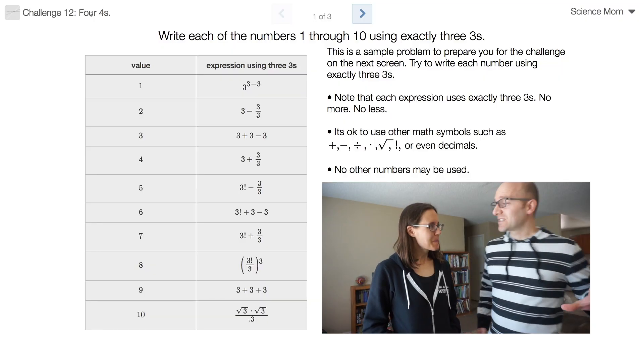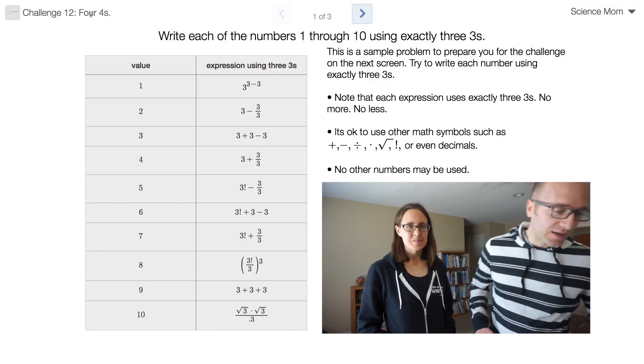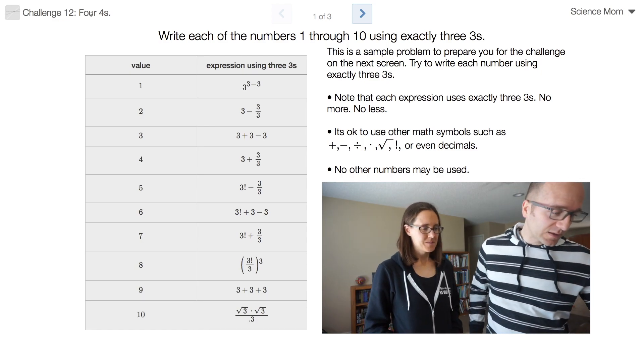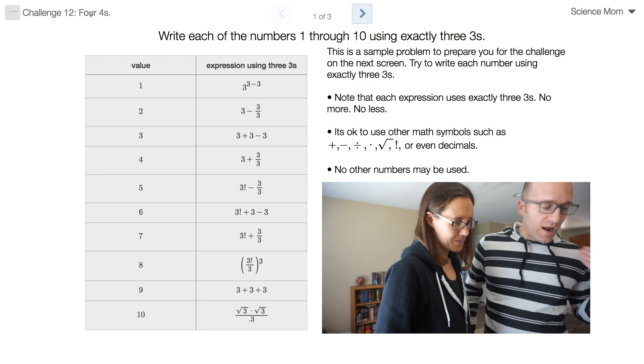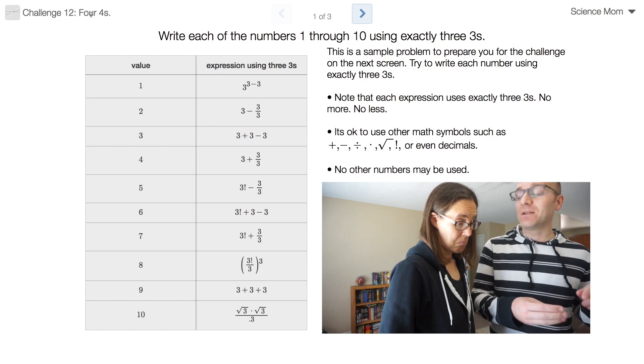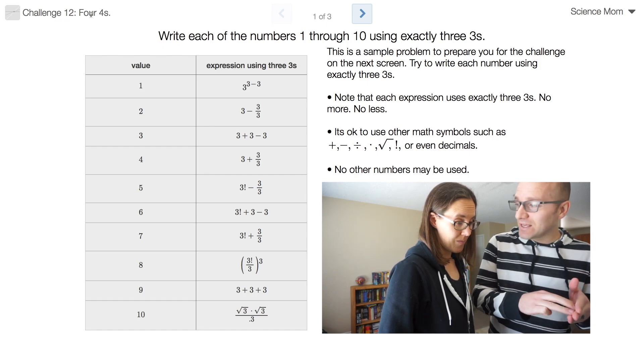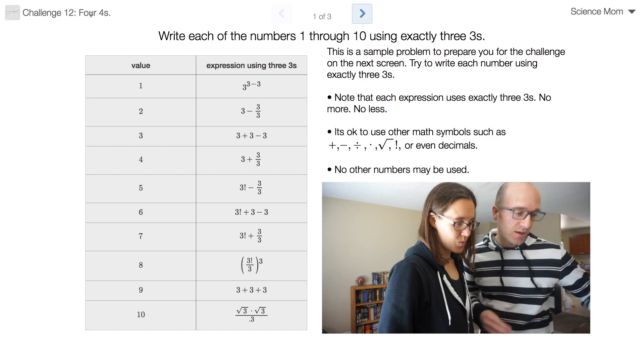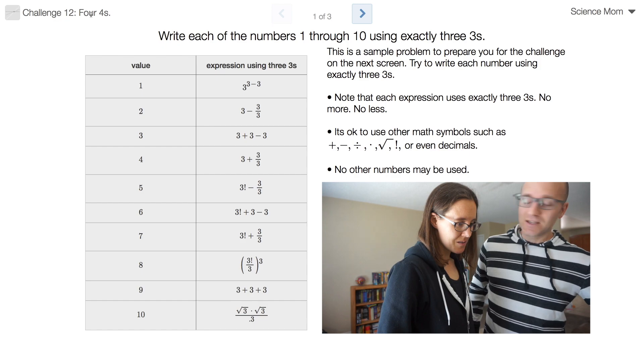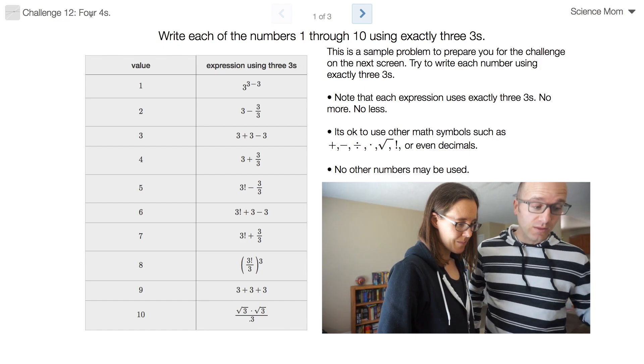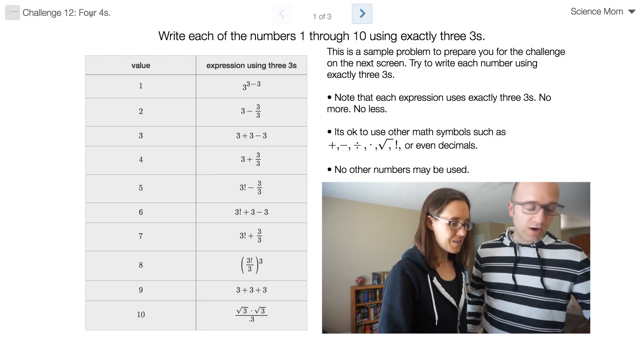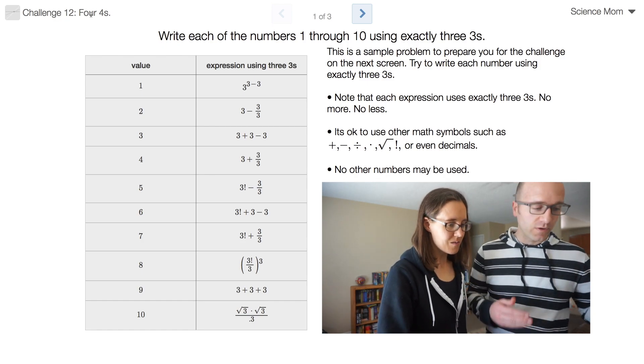Okay, so to start off with on this problem I've got a screen here displaying a very similar problem to the problem I'm going to give you. So in this one you had to write the numbers 1 through 10 using only the number 3 and I had to be exactly three 3's in each expression. So 3 plus 3 minus 3 equals 3. That's right, so the number 3 would be really easy to use but I had to use all three 3's so it made it a little harder. The number 2 I did 3 minus 1 but I had to write the number 1 using 3 over 3. Gotcha.